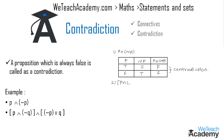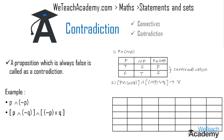Now let us consider another example. We have the compound statement (p and not q) and (not p or q), which we will call r. Let us draw a truth table where the first two columns give the truth values for p and q, the third and fourth columns give the truth values for not p and not q, the fifth column gives the truth value for p and not q, the sixth column gives the truth value for not p or q, and the last column gives the truth value for r.